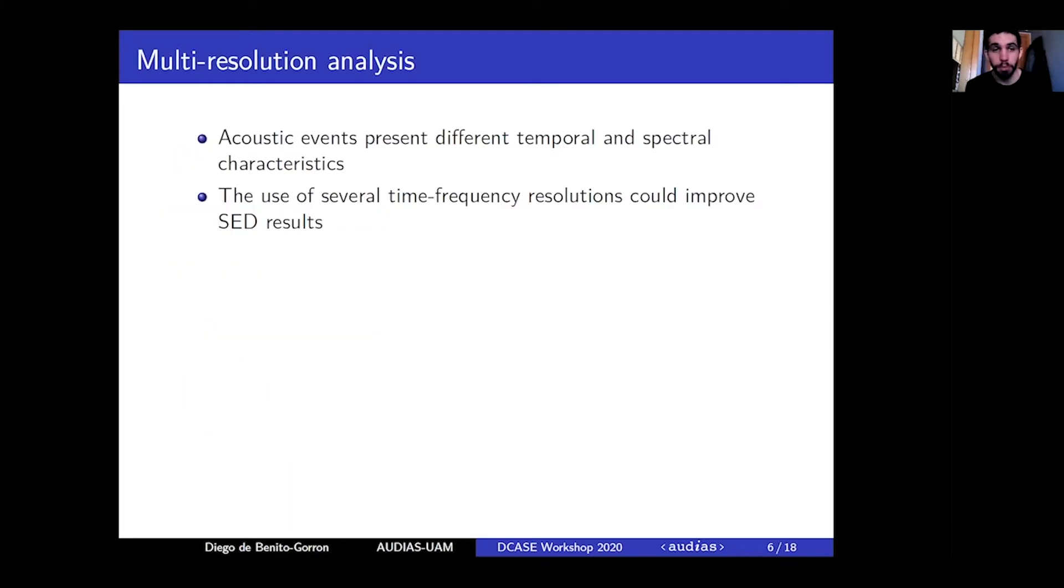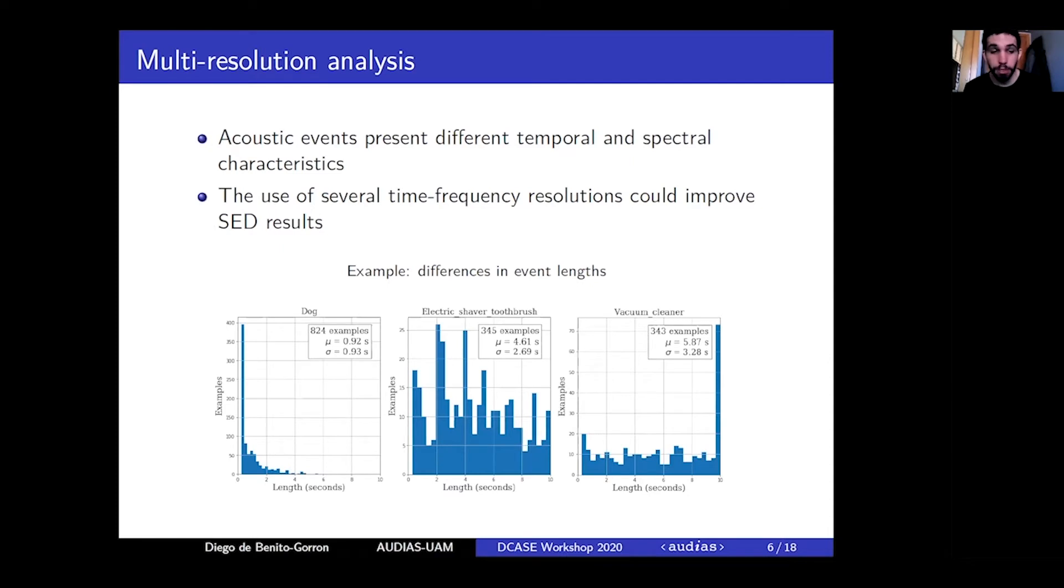The motivation for a multi-resolution analysis is the differences in temporal and spectral characteristics presented by different categories of sound events. Therefore, different time frequency resolutions could be more suited to certain event categories and using several resolutions could improve the performance of sound event detection systems. For instance, a temporal characteristic of events is their durations. These three histograms show that the distributions of durations are very different from one class to another.